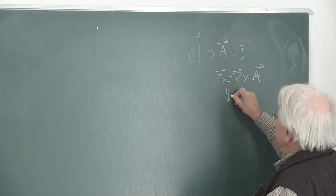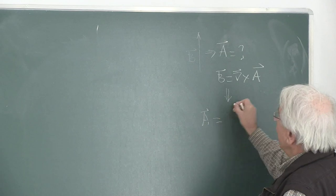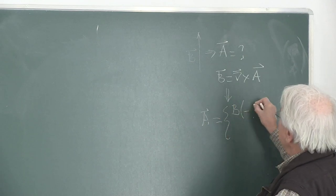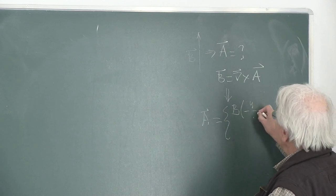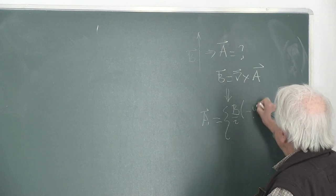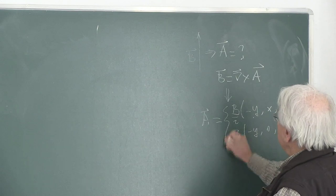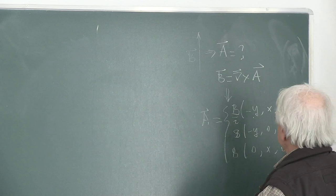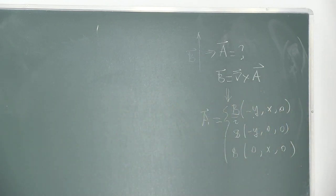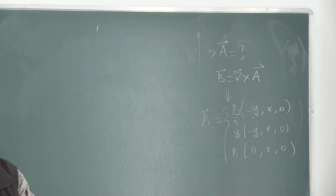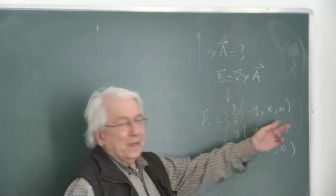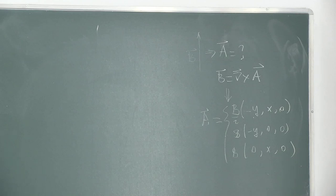I can immediately write several solutions for A. For example: B(-y/2, x/2, 0) — written as (B/2)(-y, x, 0) — is one solution. Another is B(-y, 0, 0), and a third is B(0, x, 0). All three satisfy curl A = B and the Coulomb gauge condition ∇·A = 0. The first is called the symmetric gauge; the second and third are the Landau gauges, which are well-suited for the Landau-level problem.